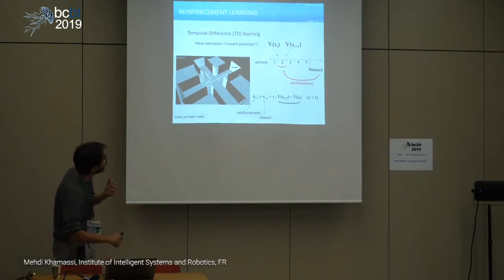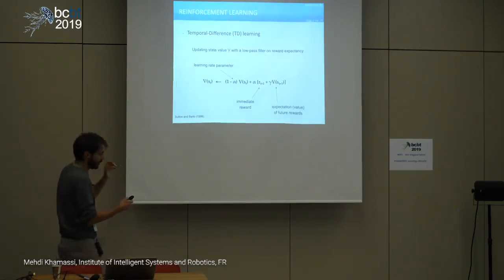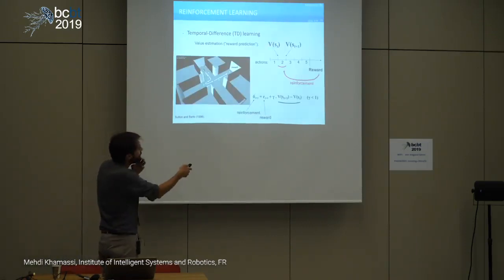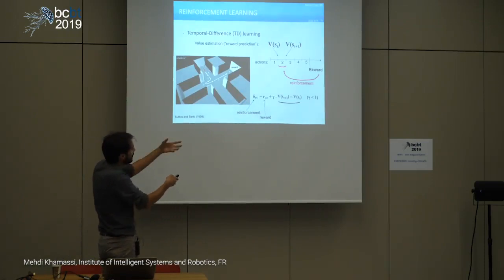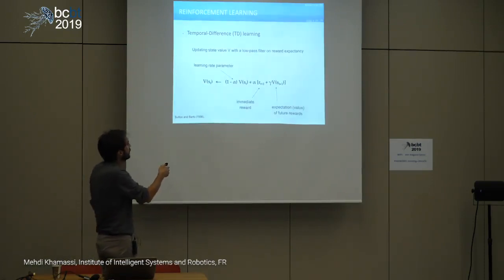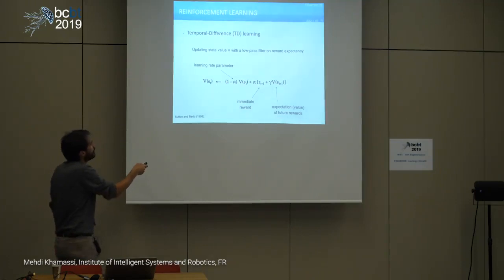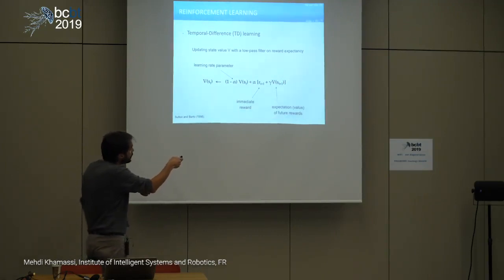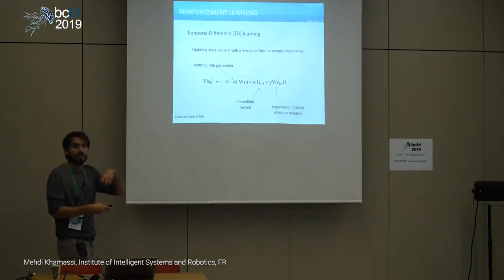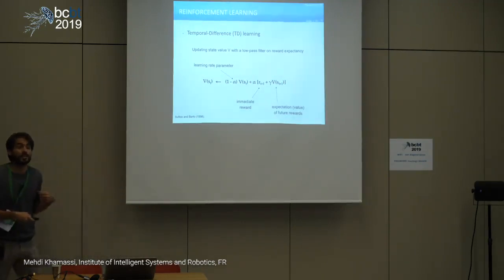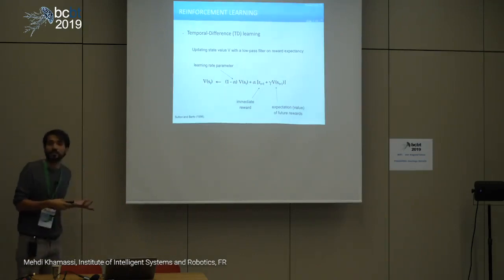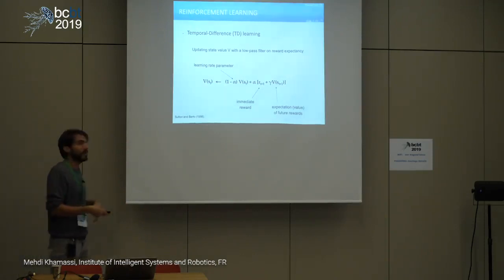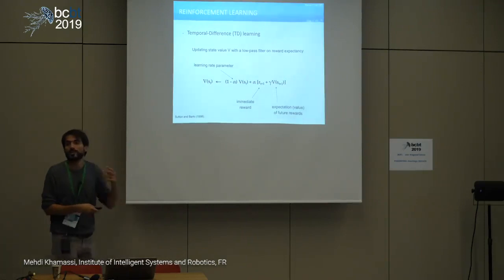This equation is then used to update your value. The value is updated based on the previous value multiplied by one minus a learning rate, and this learning rate weights your new expectation. In the end, it's just a low-pass filter on your reward expectation.